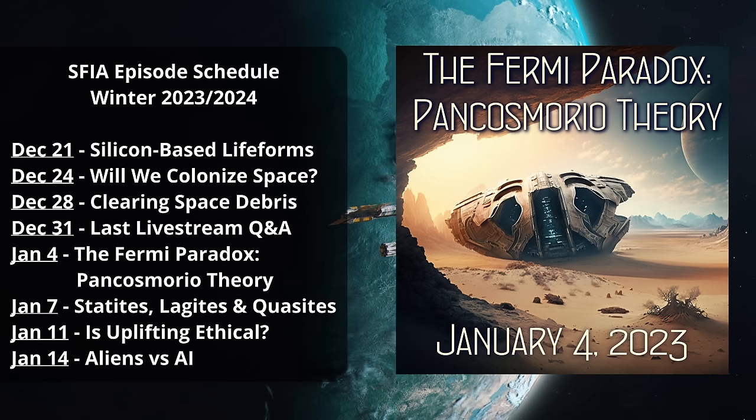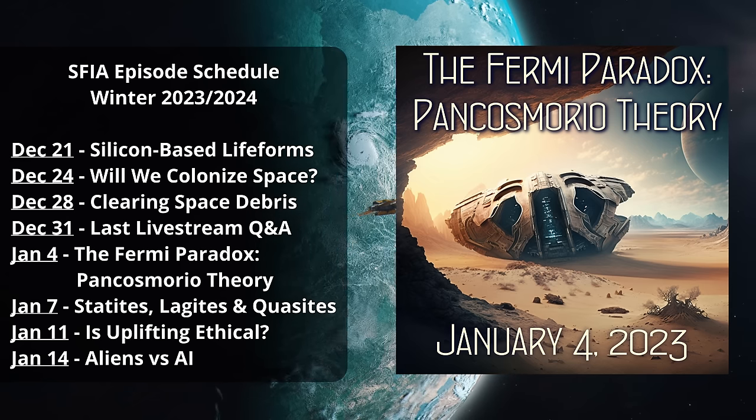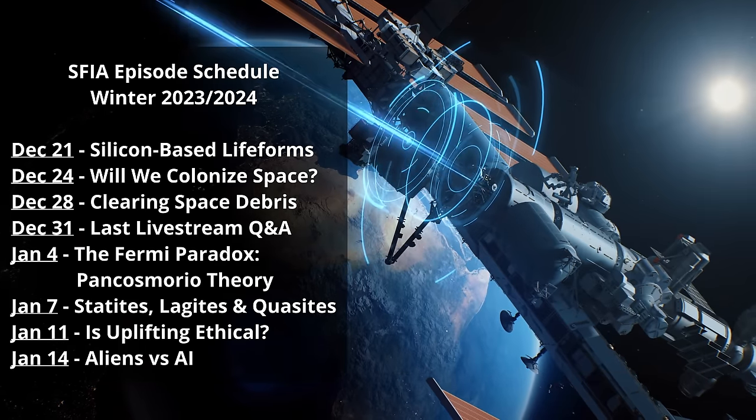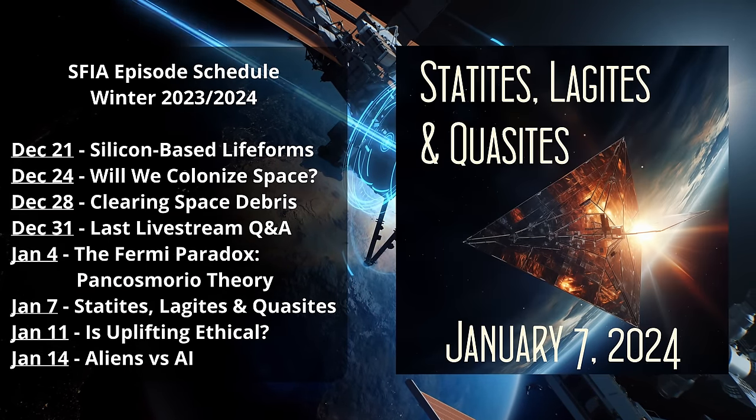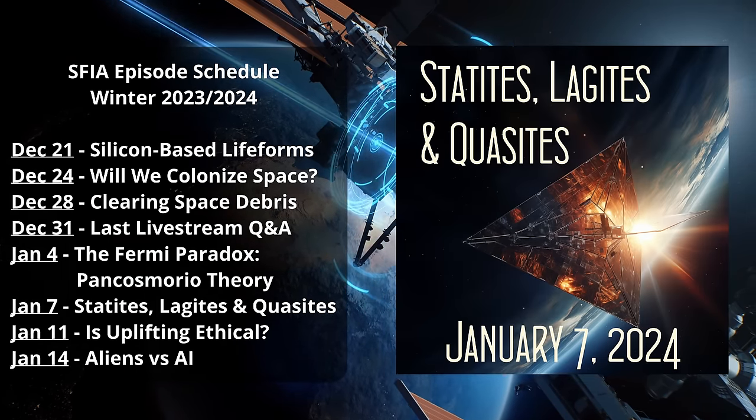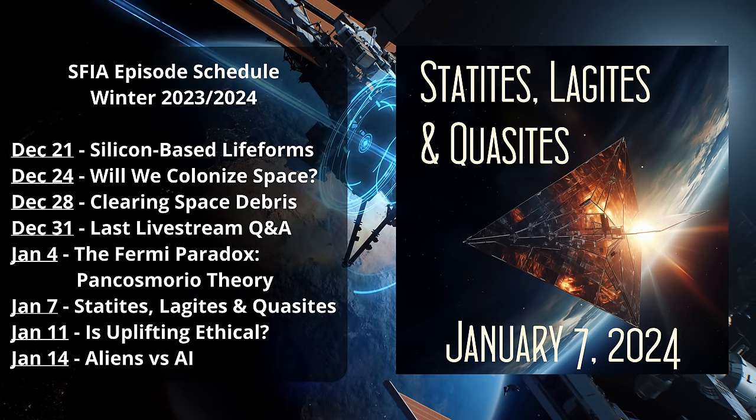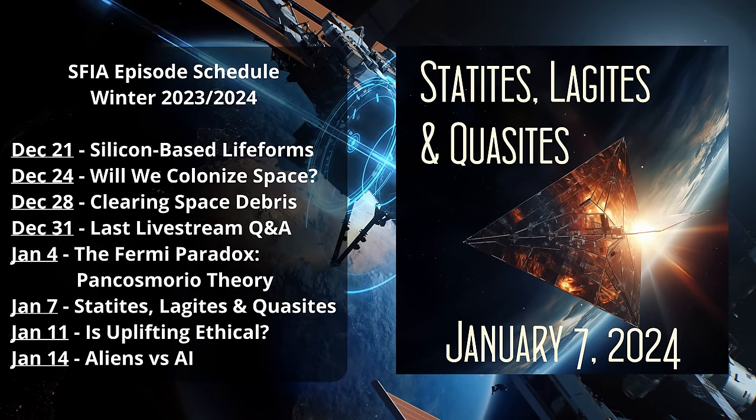And then we'll move into our 10th year here on SFIA with a return to the Fermi Paradox and a look at Pan-Cosmorial Theory and the idea that colonizing other planets around distant stars may simply be ecologically unfeasible. Then we'll have a bonus episode on atypical satellites like the Statite, Lagite, and Quasite on Sunday, January 7th.